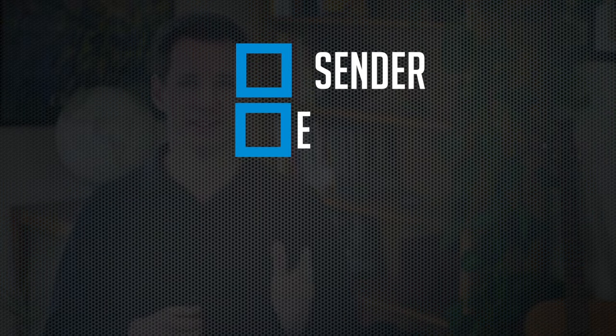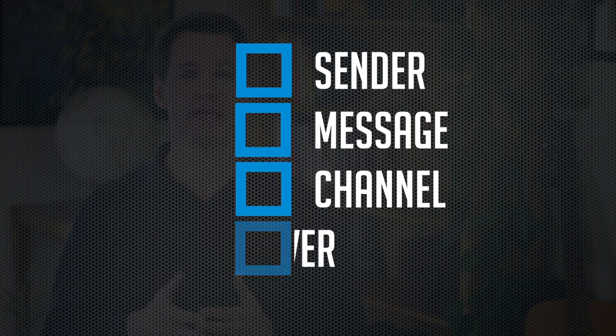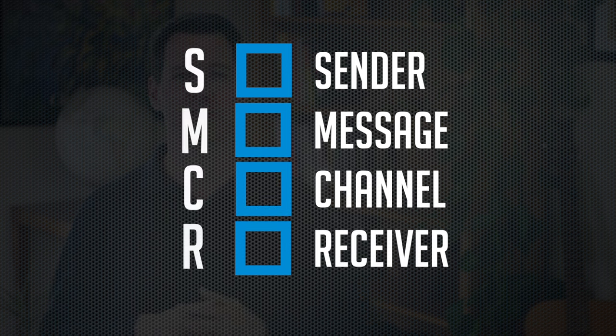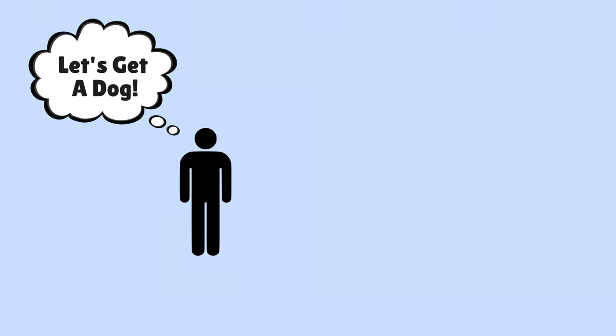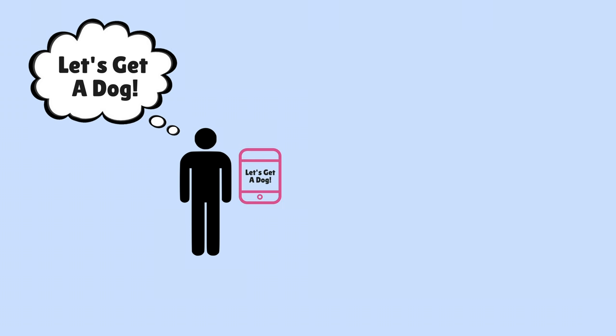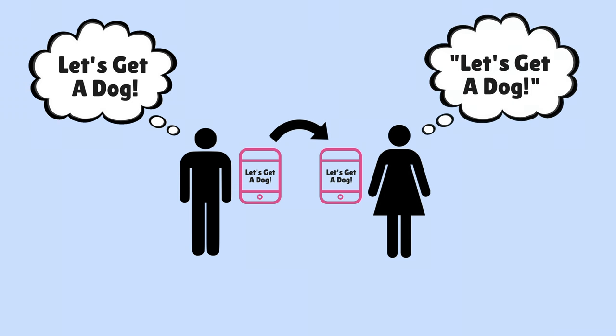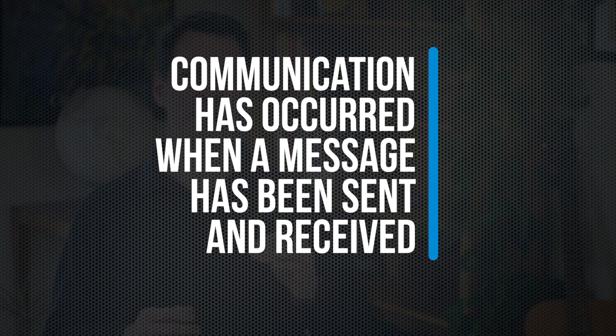There are four main parts of this model: the sender, the message, the channel, and the receiver — often abbreviated by the first letters of those words. For example, let's say I am the sender, and I write into my phone a thought I have. I encode a message into words that says 'let's get a dog,' and I send that message through the phone system — through the channel — and it arrives at my wife's phone. She's the receiver, and she decodes the message. At that point, according to this model, communication has occurred — when a message has been sent and received.